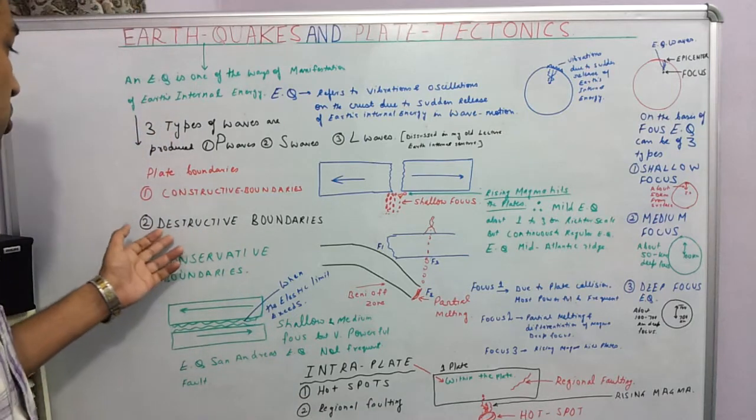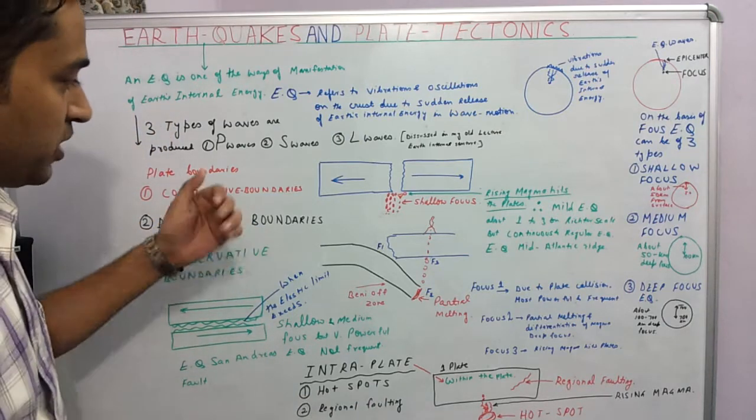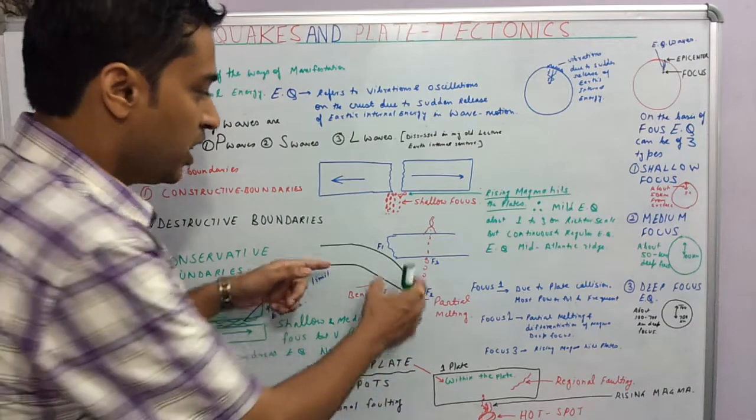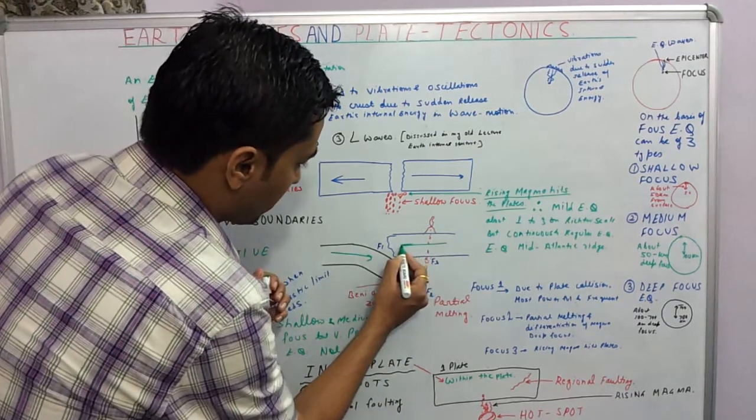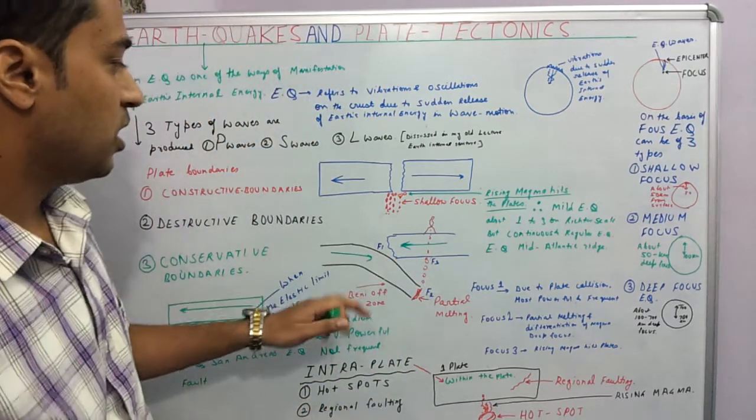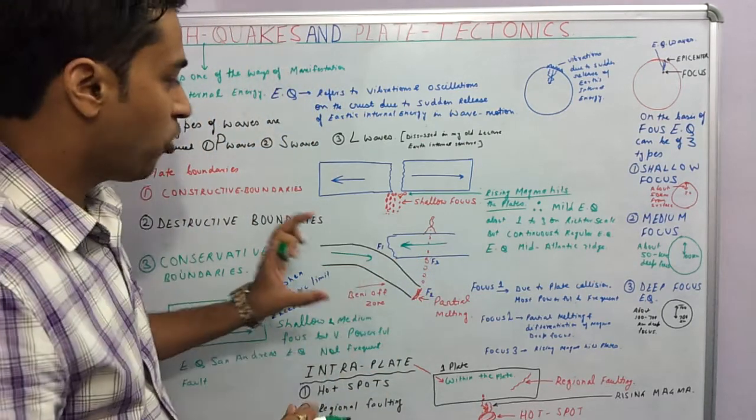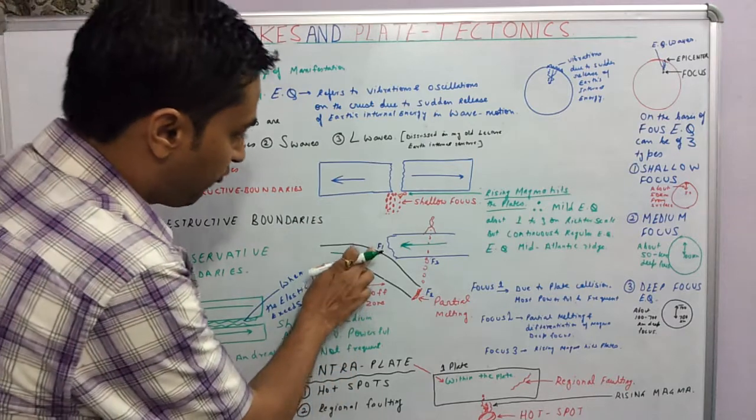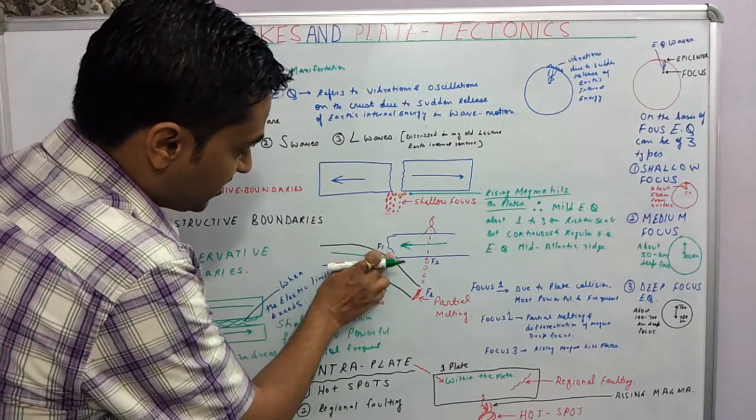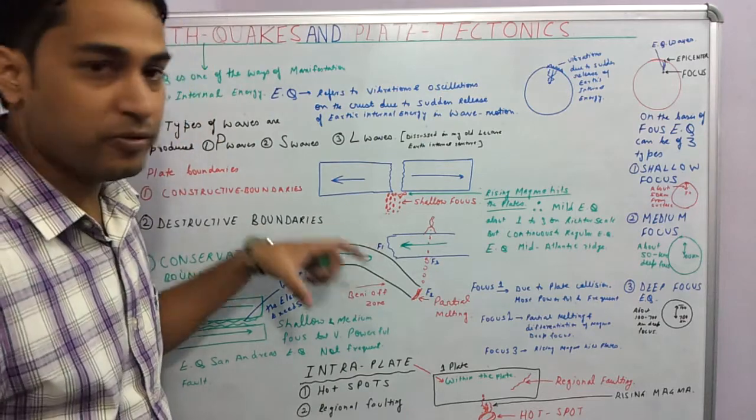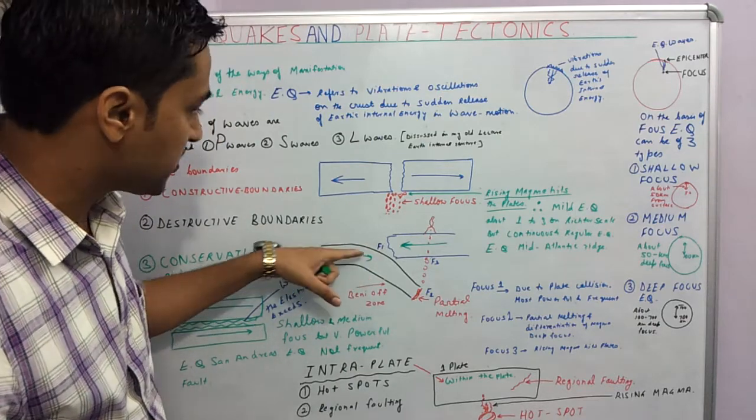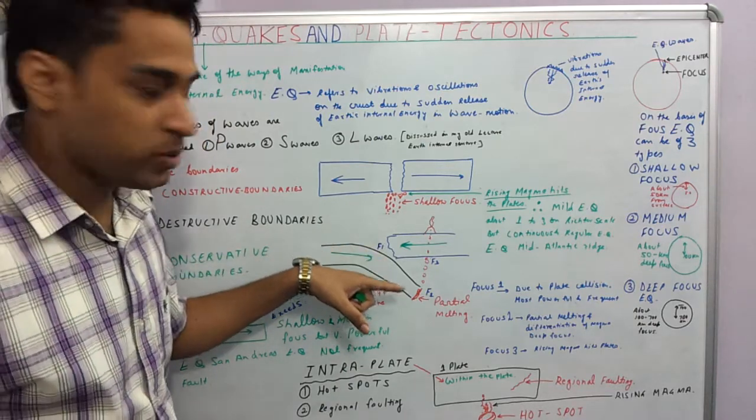Now we will come to destructive plate boundaries. In the destructive plate boundaries, two plates collide against each other, and earthquakes occur at three different focuses in this kind of boundary. F1, I have made F1 here, is the place where two plates are hitting, and F1 is the place where most earthquakes occur in this context, and most powerful earthquakes also occur.